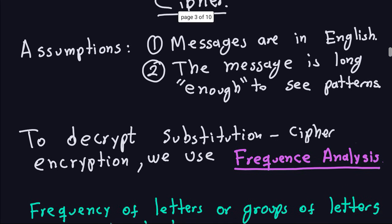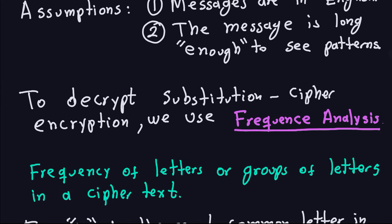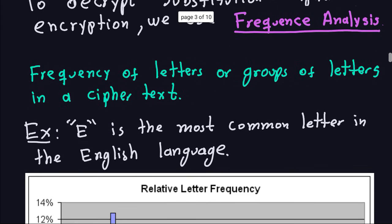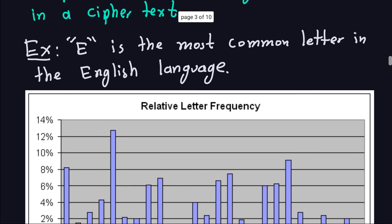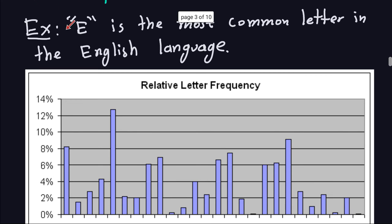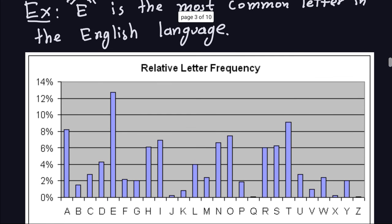Frequency analysis means we analyze the frequencies of letters or groups of letters in a ciphertext. We look at what are the most common letters that repeat in the message — single letters, two-letter groups, three-letter groups, and so on. In the English language, the letter E is the most common letter. If you take all the words in the dictionary and count the E's, E will be the most repeated letter.